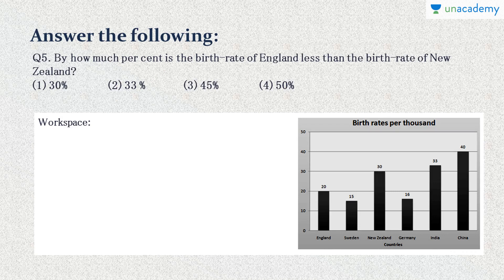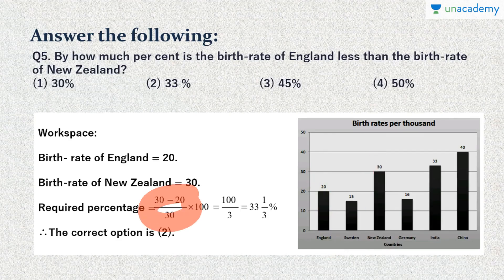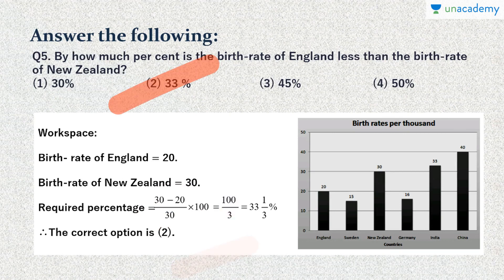Question 5: By how much percent is the birth rate of England less than that of New Zealand? England is 20 and New Zealand is 30. The formula is: (New Zealand − England) / New Zealand × 100 = (30 − 20) / 30 × 100 = 100/3 = 33⅓%. The closest option is 33%, so option 2 is correct.